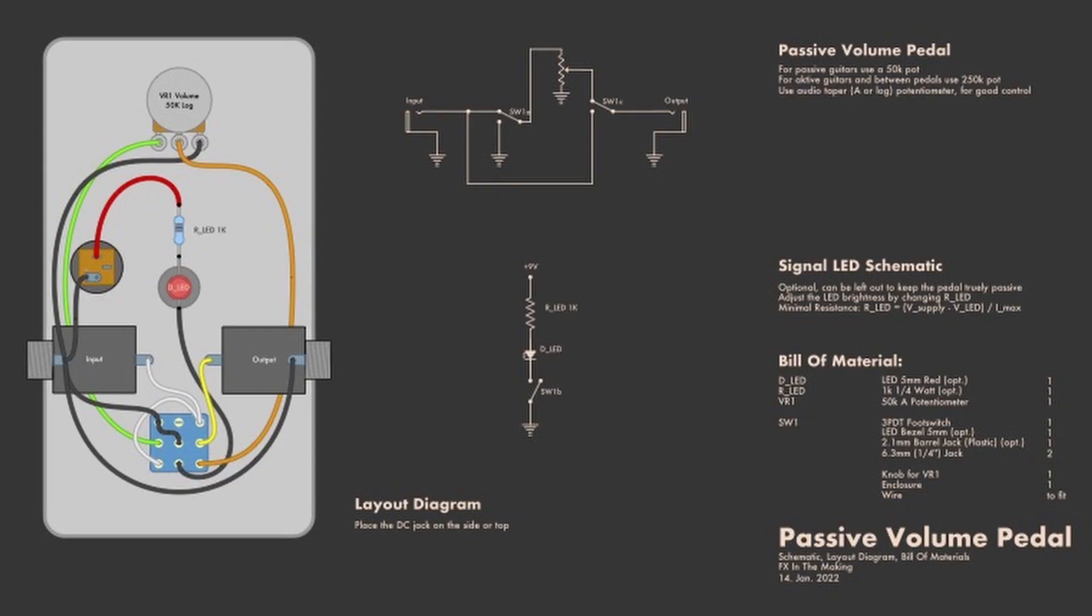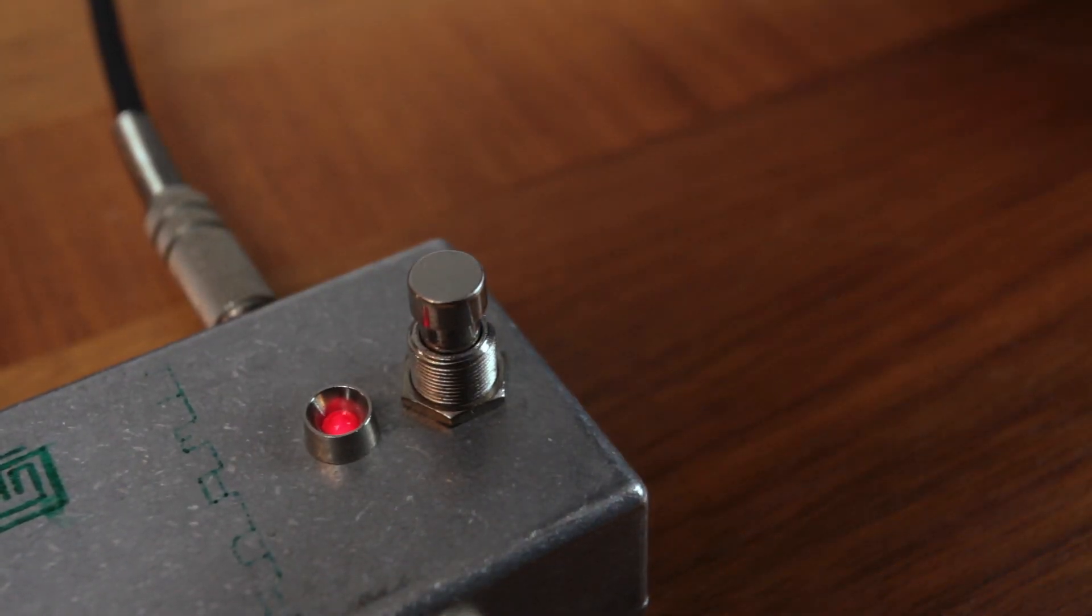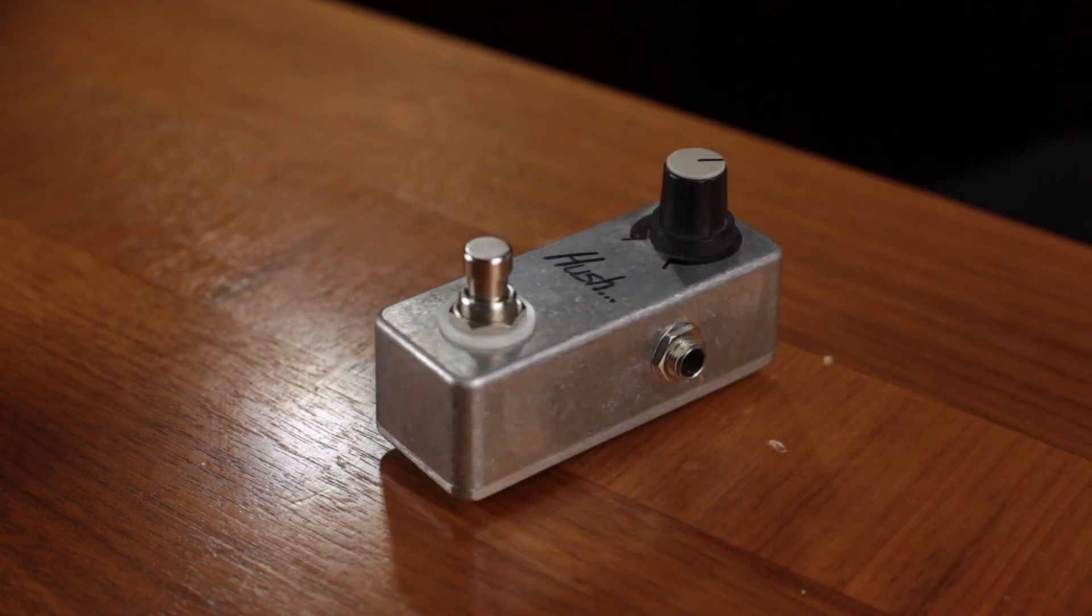If you want to build this pedal for yourself it'll cost you about 15 dollars in parts. I've put a link to the schematic layout diagram and bill of materials in the description below. I've also added in an optional status LED as discussed in the previous video. I wanted to make my personal build as small as possible and that's why I left out the DC jack and LED.